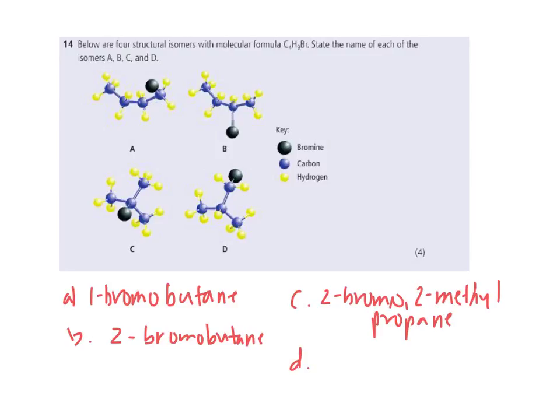And D, because the bromo is attached to the methyl group, now I look at it as going this way, whereas this is my longest backbone here. This is 1-bromo, 2-methyl propane.